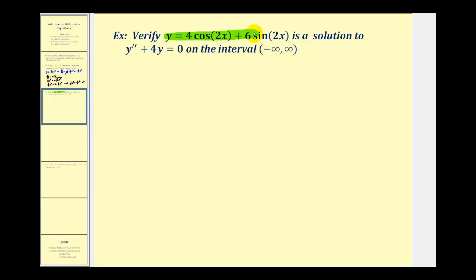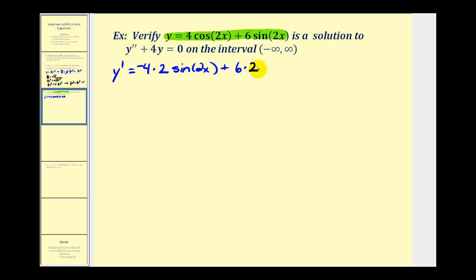Given y, let's find y prime. Y prime is going to be equal to four times the derivative of cos(2x), which will require the chain rule because we have a composite function where the inner function is 2x. The derivative of cos(2x) is negative sin(2x) times two. Plus six times the derivative of sin(2x), which applying the chain rule gives cos(2x) times two. So y prime equals negative 8sin(2x) plus 12cos(2x).